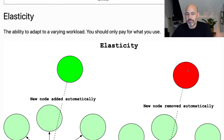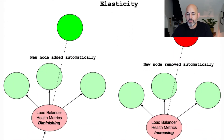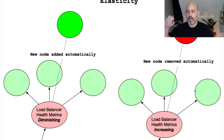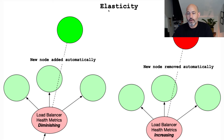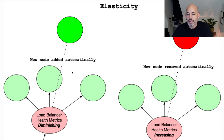Another core concept is elasticity. A load balancer in cloud computing uses a health metric that you as the architect define. It can automatically add a node if CPU reaches a certain level, or scale down to remove a node so you're not paying for more services than you need. This is one of the most misunderstood and least-implemented concepts in cloud computing because it requires the skill to design infrastructure with elastic capabilities. Following cloud best practices here can result in substantial cost savings.